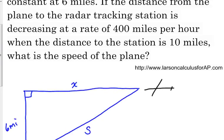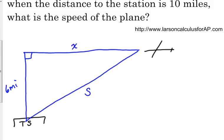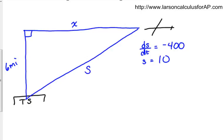If the distance from the plane to the radar tracking station is decreasing at a rate of 400 miles per hour, so that means ds over dt is negative 400, because it's decreasing, when the distance is 10 miles, so S is 10. Let's set up the Pythagorean theorem. Anytime you deal with a right triangle, you're almost always going to use the Pythagorean theorem. So in this case, we've got X squared plus 6 squared is equal to S squared. Just simplify life by plugging in any things that do not ever change in the problem. In this case, that's 6 does not change.